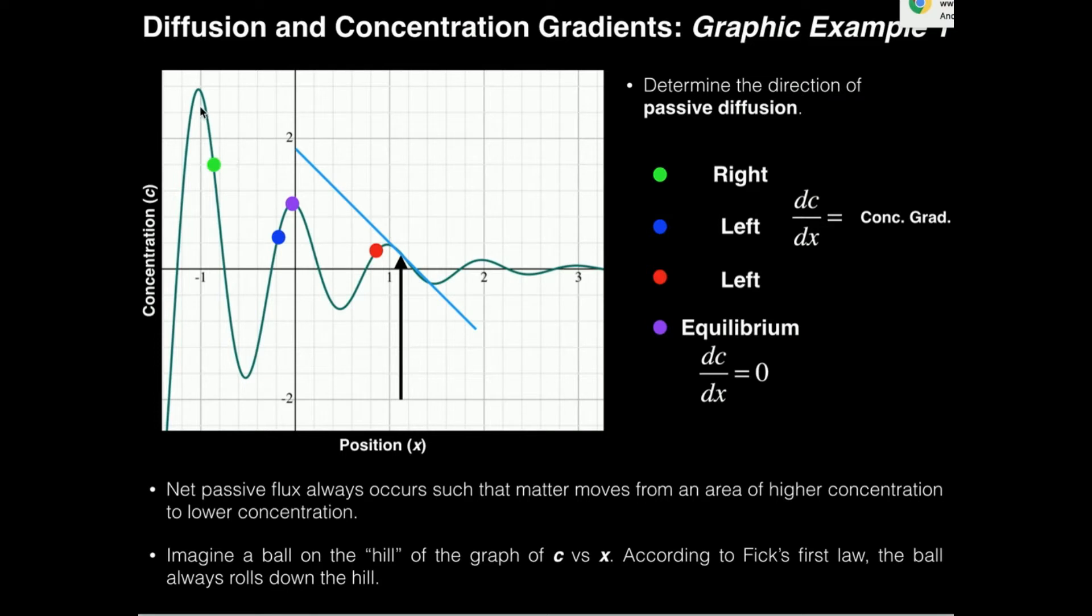Alright, now if I talk about particles here versus here in space, which direction will the particles move? Will they move basically to the right, which is down the hill, or will they move left up the hill? Well, if you're just thinking about it logically, they're going to diffuse from an area of high concentration to low concentration. So in this case they would move to the right, which is down the hill.